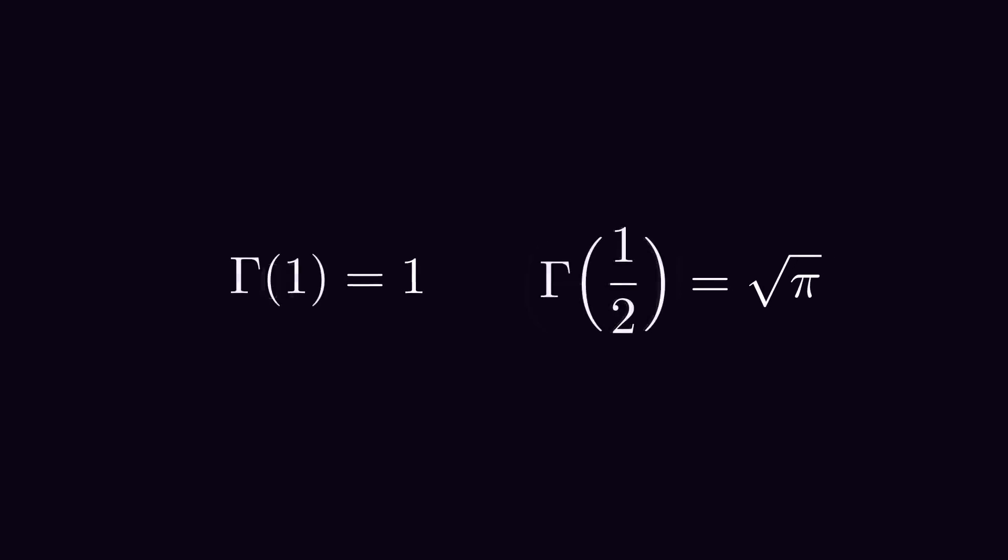Something that usually comes up at this point is the gamma function. But we won't use it in this video and instead define the factorial for all integers and half integers. And, more specifically, we're going to see why, of all things, the square root of pi appears in there.